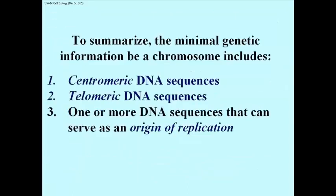So to summarize, the conclusion from this experiment is that the minimal genetic information required to make a chromosome is that this structure has centromeric DNA sequences, telomeric DNA sequences, and at least one origin of replication.